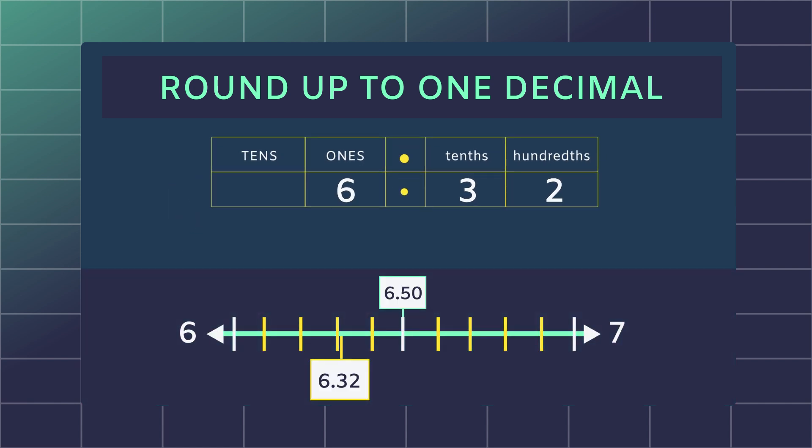To do this effectively, let's use the number line. Applying the method that we have learned, you see that two is less than five. Therefore, it will round down to the lower number 6.3.